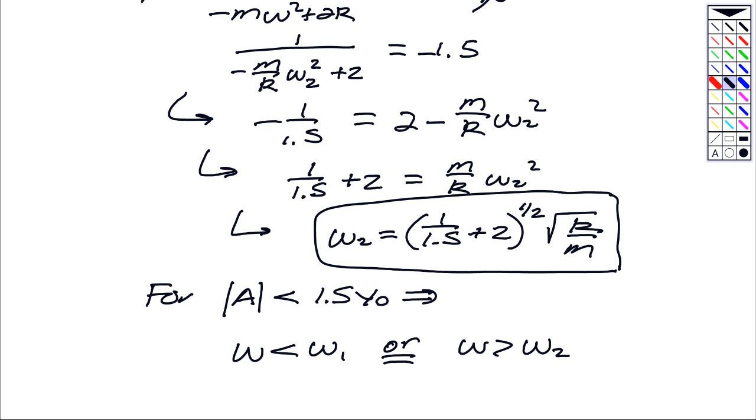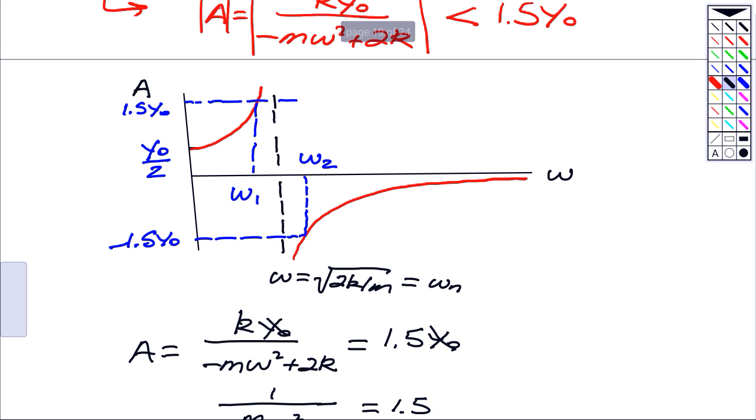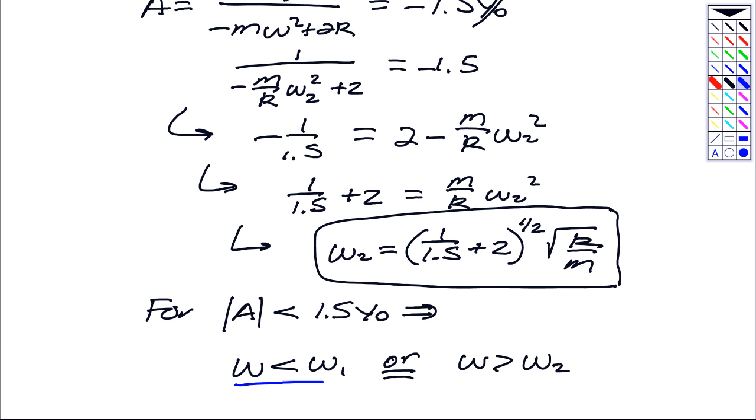How did we do this? Well, we started out with our FBD, we got our equation of motion. And writing down the steady state response, we solved for this amplitude A. I think the key step here was to make a plot of A. And what we want to do is find values of omega such that the amplitude of A is less than 1.5 Y naught. So it's all the values of omega to the left of omega 1 and all the values of omega to the right of omega 2. And so we solved for omega 1 and omega 2, and know that this is what we need.